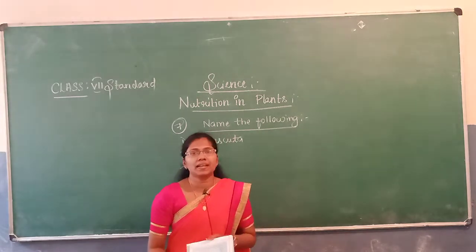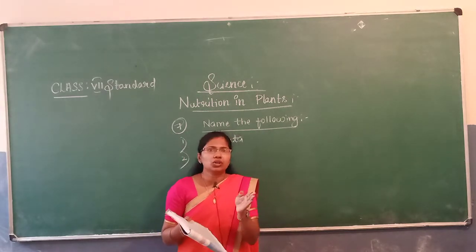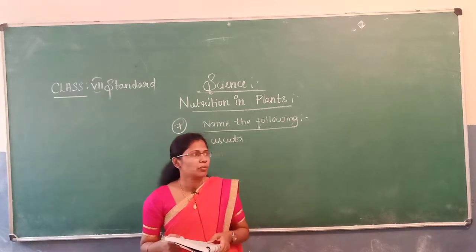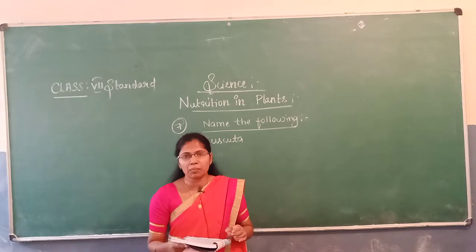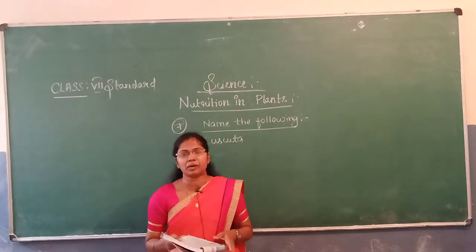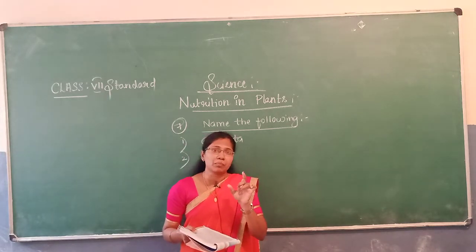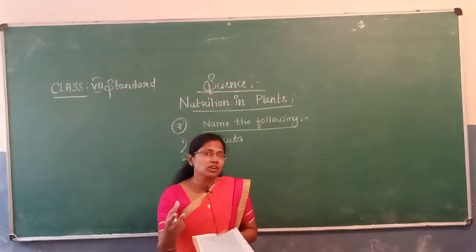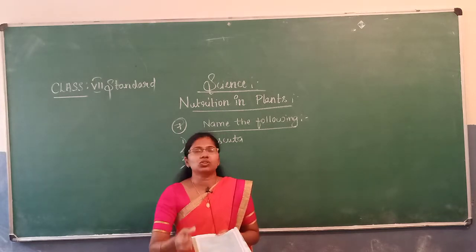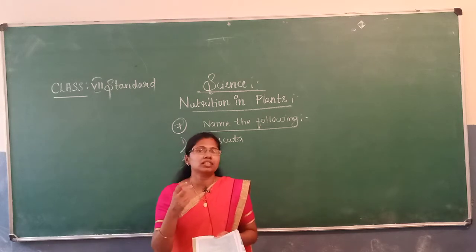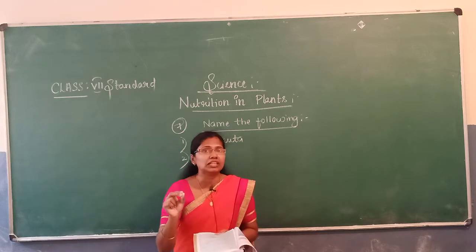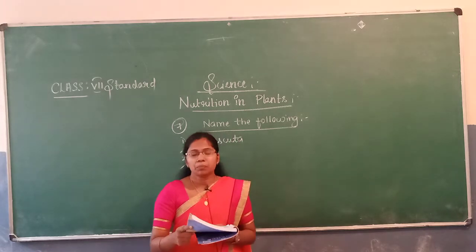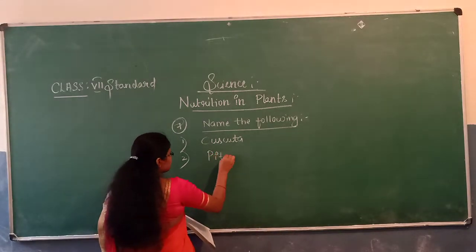The next question: a plant that is partially autotrophic. In insectivorous plants, I discussed about the pitcher plant. The pitcher plant prepares its own food, but it also eats insects because the soil lacks nitrogen content, so to obtain that nitrogen it eats insects. The plant which is partially autotrophic is the pitcher plant.